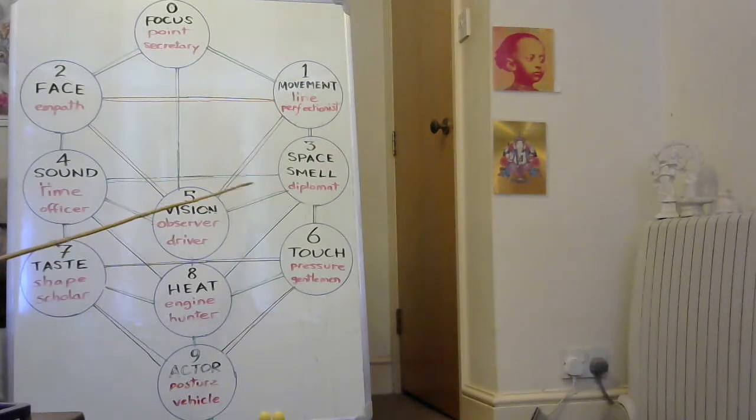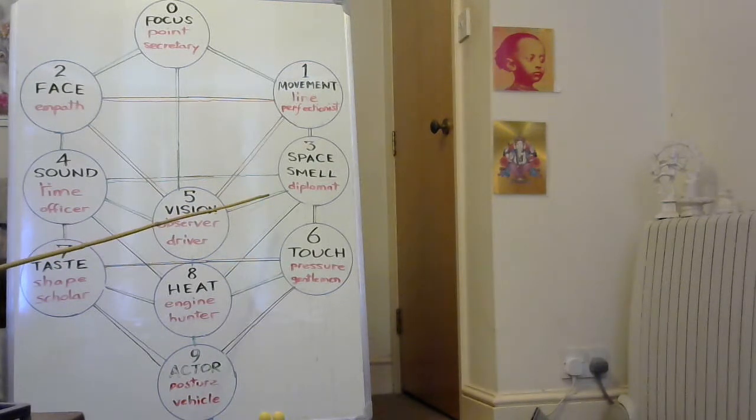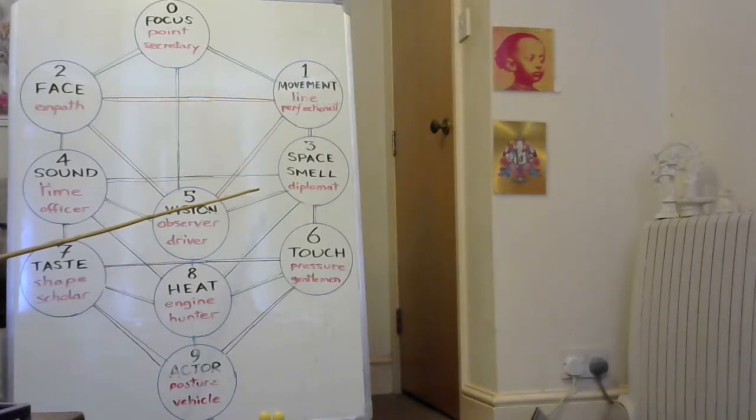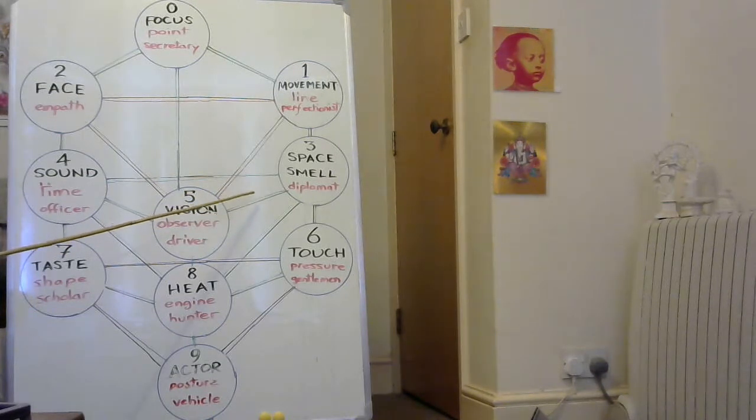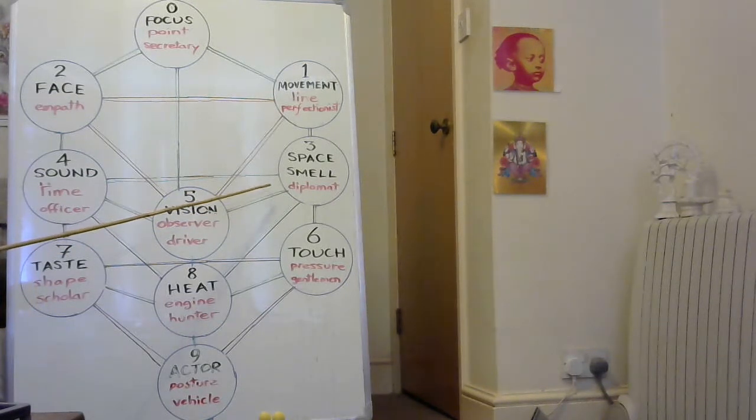27, 28, 27 is reflection, 28 is excess. 27 is about zooming and reflection. Examination.